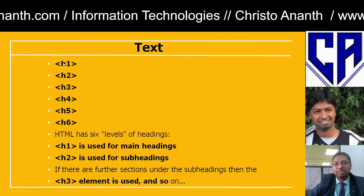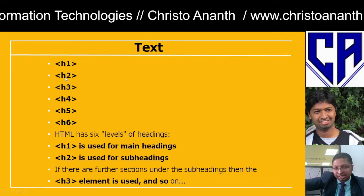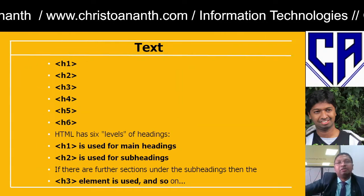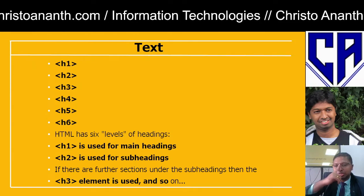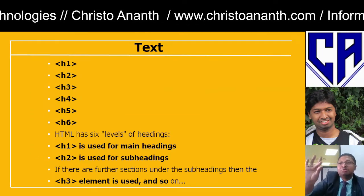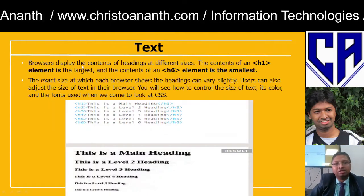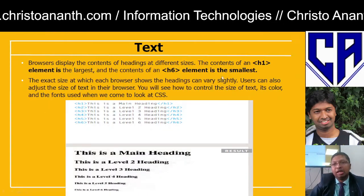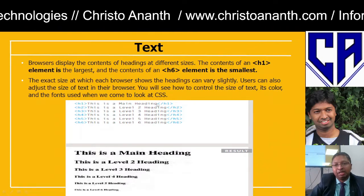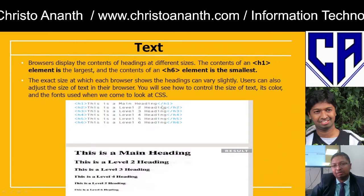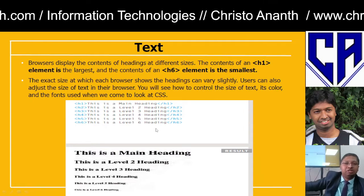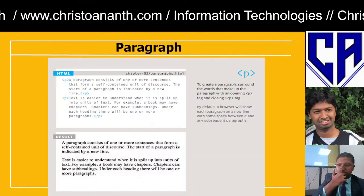There are six levels of headings. h1 is the highest level — biggest font. h2 is the next level, h3 the next, then h4, h5, and h6 — the smallest. Browsers display heading contents at different sizes: h1 is the largest, h6 is the smallest. For example: 'This is a main heading' in h1, 'This is a level 2 heading' in h2, down to level 6 heading. You can also use HTML for animations, titles, subheadings, and text styles.